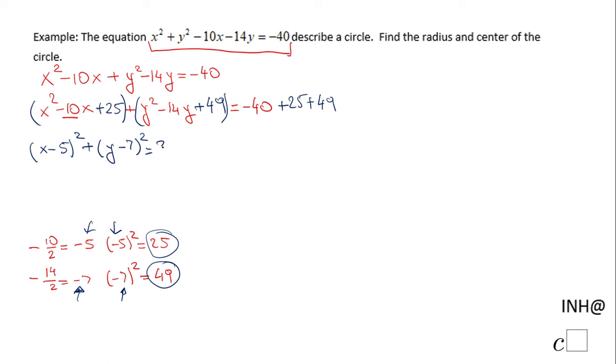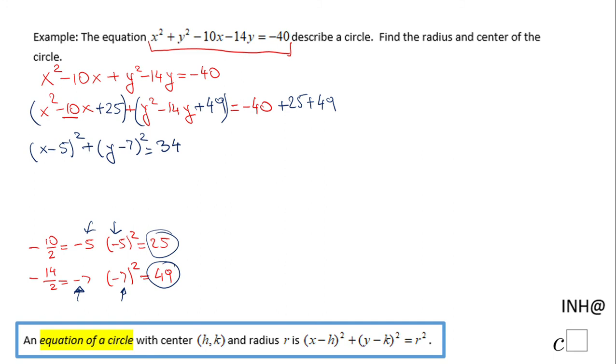So now this equation you see here looks the same as this one. In fact, I'm gonna copy that equation right here: x minus h squared plus y minus k squared equals r squared. And now I can identify h, k, and r.